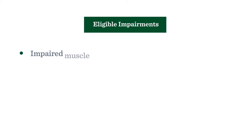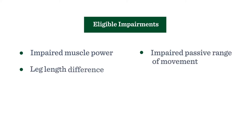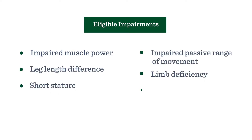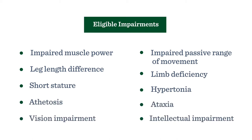Currently there are 10 eligible impairments considered for parasport. Eight of these are physical impairments, one vision impairment, and one intellectual impairment.